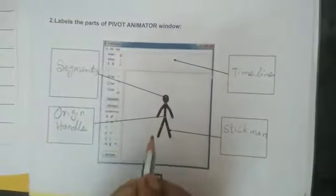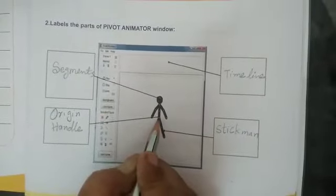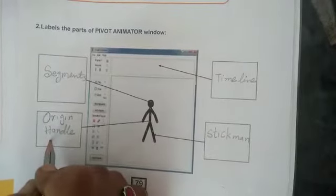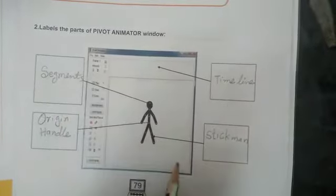Here, next one, they have given a mark to the orange color dot. This orange color dot is known as orange handle or orange origin.